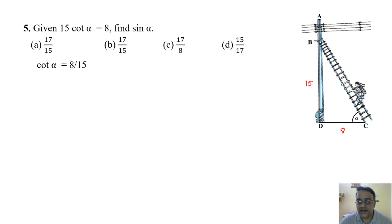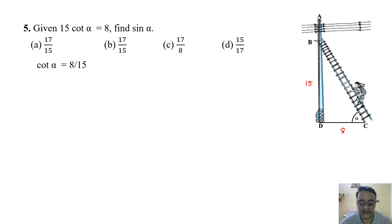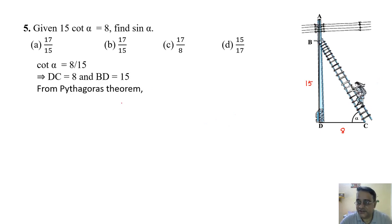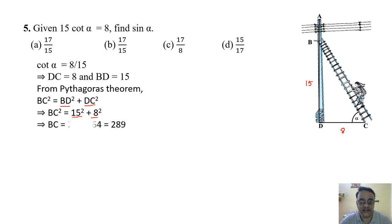Using Pythagoras theorem: BC² = BD² + DC² = 15² + 8² = 225 + 64 = 289. The square root of 289 is 17. Now sin α = opposite/hypotenuse = 15/17. The correct option is option D.